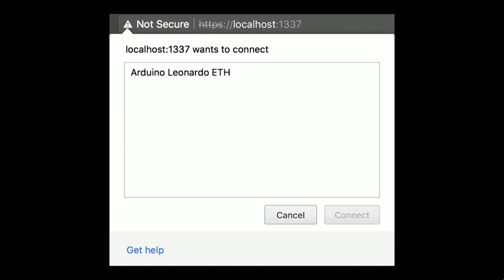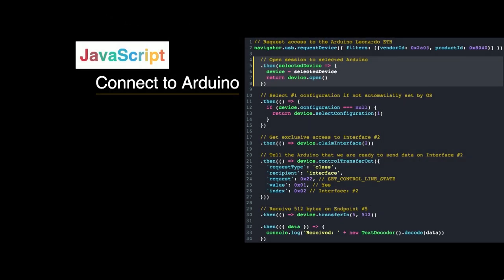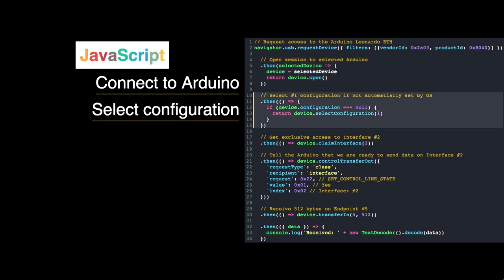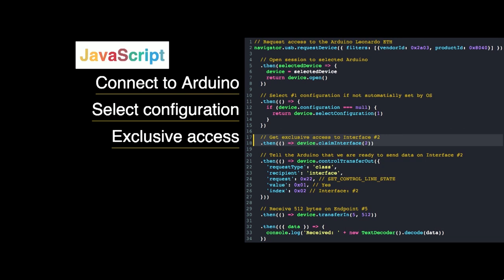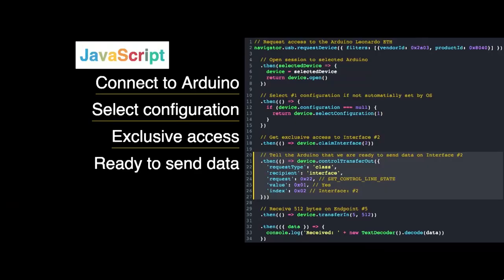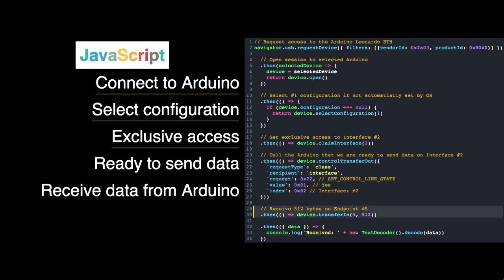If we connect it, then we can actually open the session to the device. Then we select the configuration which we need for the operating system, and we claim exclusive access on interface number two, which means no other website can use the device. Then we tell the Arduino that we are ready to send data. When the Arduino is sending data, we use a transferIn on endpoint number five, receiving 512 bytes.